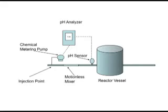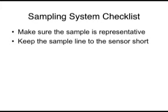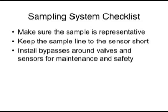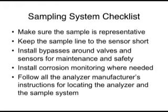When you're designing an inline or atline analyzer station, you need to spend most of your time getting the sampling system right. So here's a basic checklist to work from: make sure the sample is representative; keep the sample line to the sensor short; install bypasses around valves and sensors; install corrosion monitoring where needed; and follow all the analyzer manufacturer's instructions for locating the analyzer and the sample system.